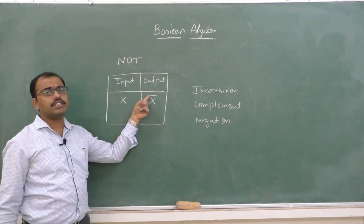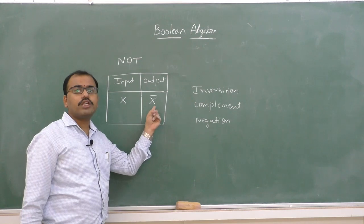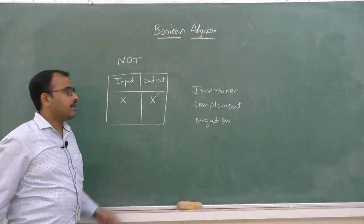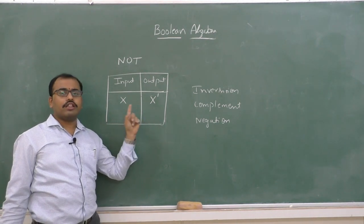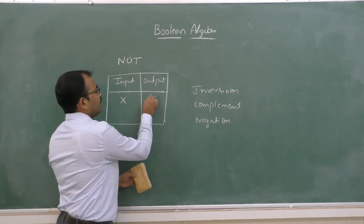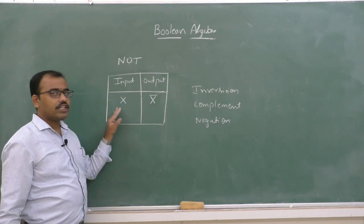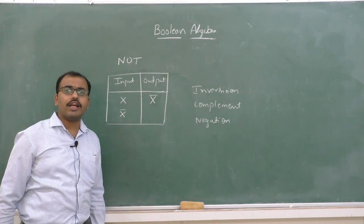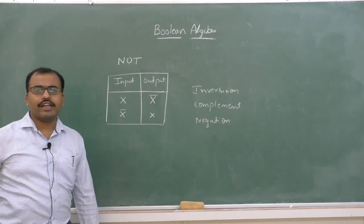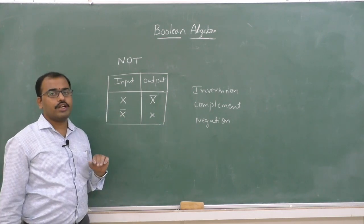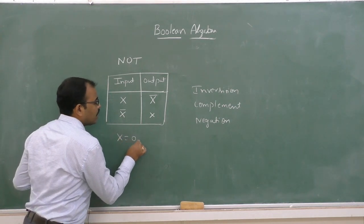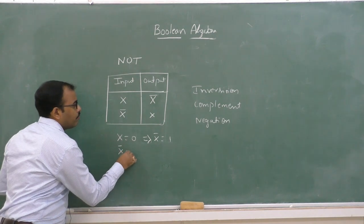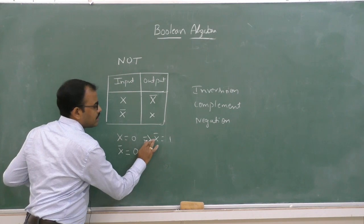The output x-bar can also be represented as x-complement or x-dash in some textbooks. If input is x, output is x-bar; if input itself is x-bar, then output will be x. So: if x is equal to 0, this implies x-complement is equal to 1; if x-complement is equal to 0, this implies x is equal to 1.